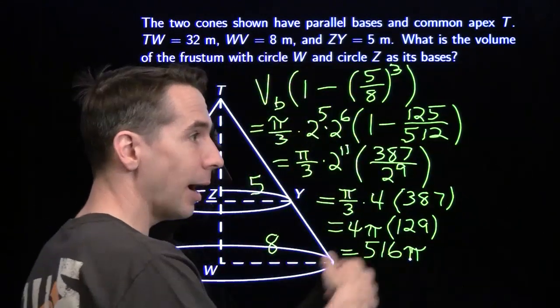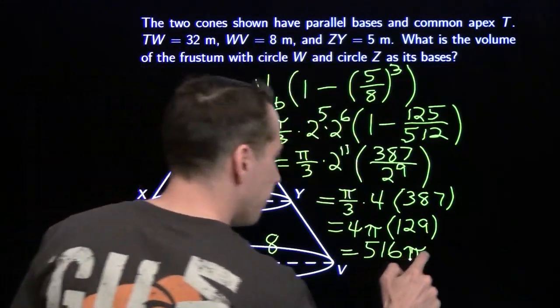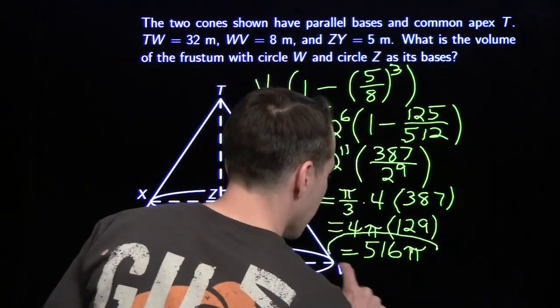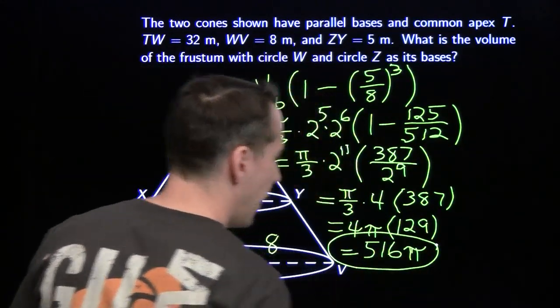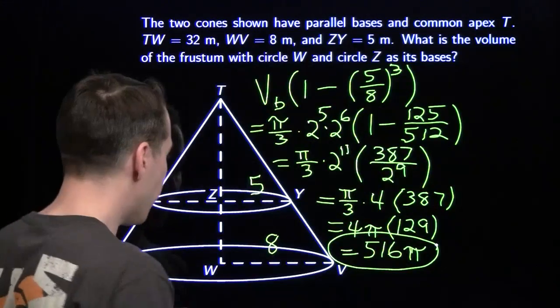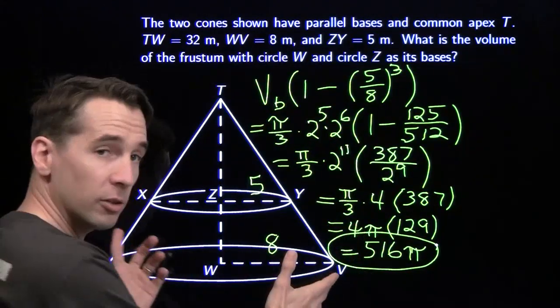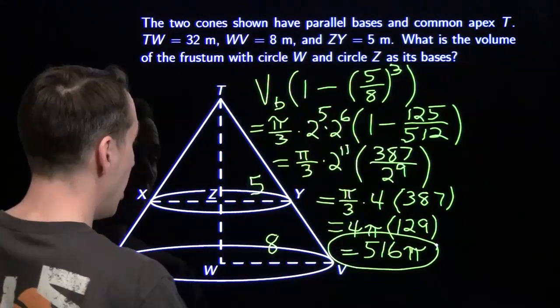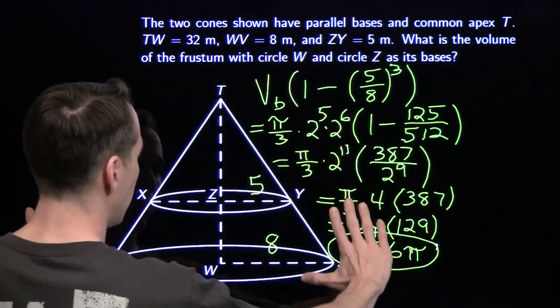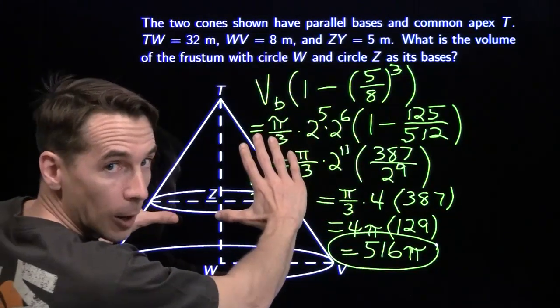And Harvey, we're finished with the arithmetic and we've answered our problem. Take away from this: we've got a frustum — just think of your frustum as a big cone with the little cone chopped off.